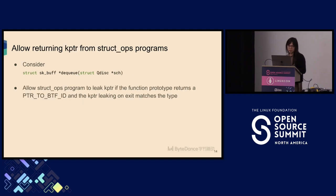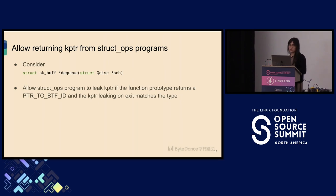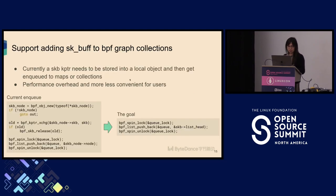The second BPF change is for dequeue. The dequeue function releases a reference to an SK-buff through its return value — semantics that current BPF does not support. So we teach the BPF verifier to allow StrucOps programs to leak a reference to an SK-pointer, with checking to make sure we are leaking the right K-pointer. The third change — and I think the most important — is to be able to enqueue SK-buffs directly to BPF graph collections, which is critical for BPF QDisc performance.